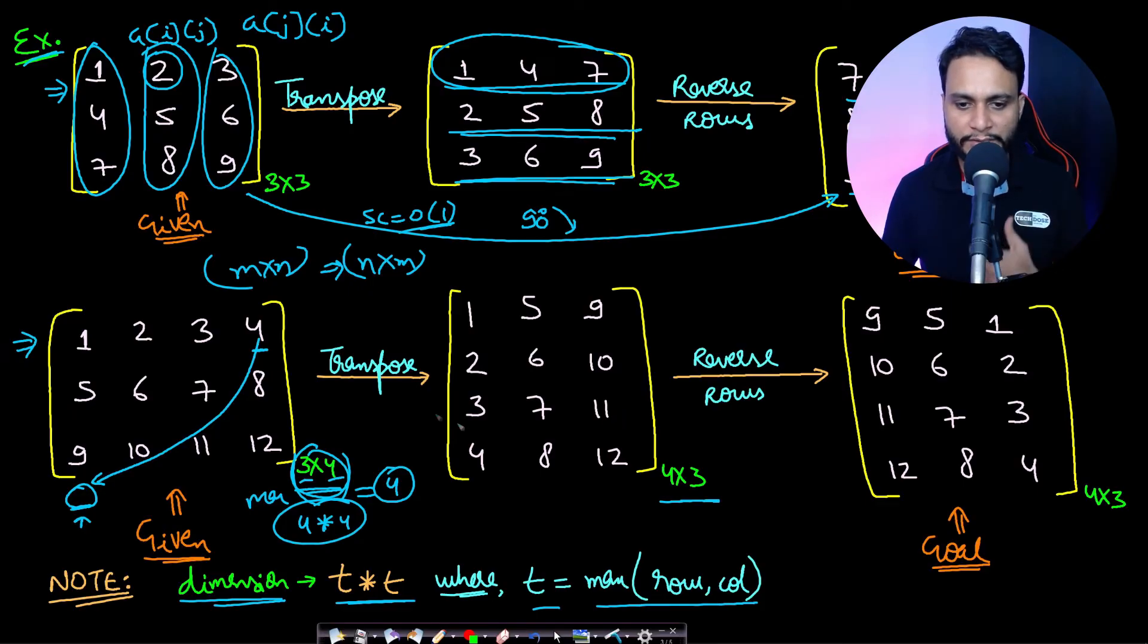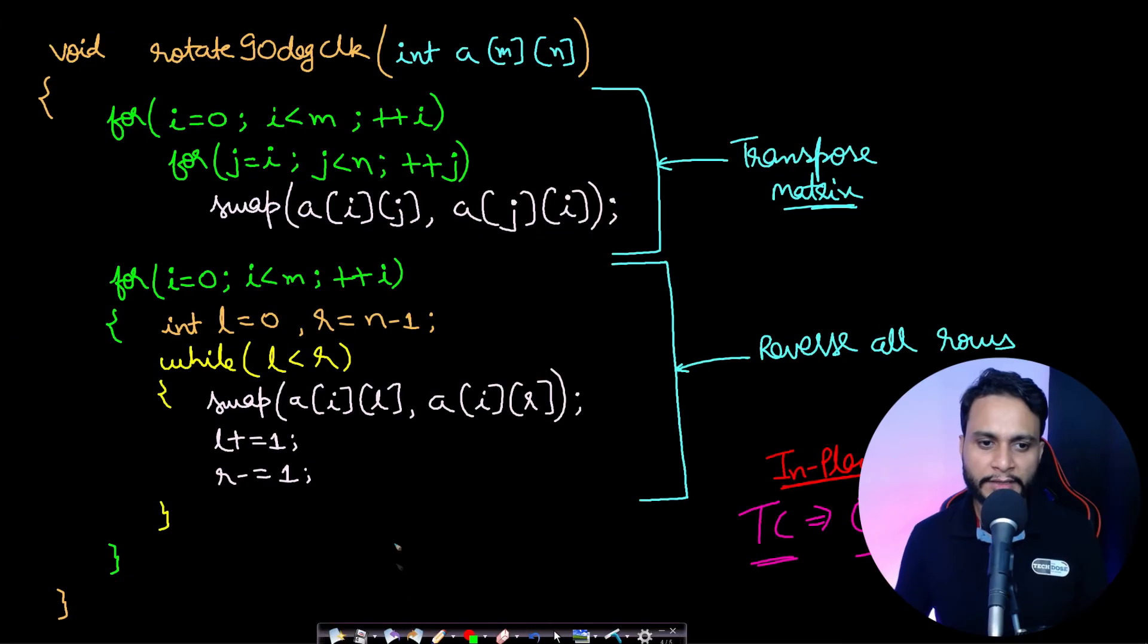For rectangular matrix you have to take this extra precaution. Now let us look at the code. In this code this is an API about rotating 90 degrees clockwise. This is just a pseudo code. In this case you get the array with M rows and N columns.